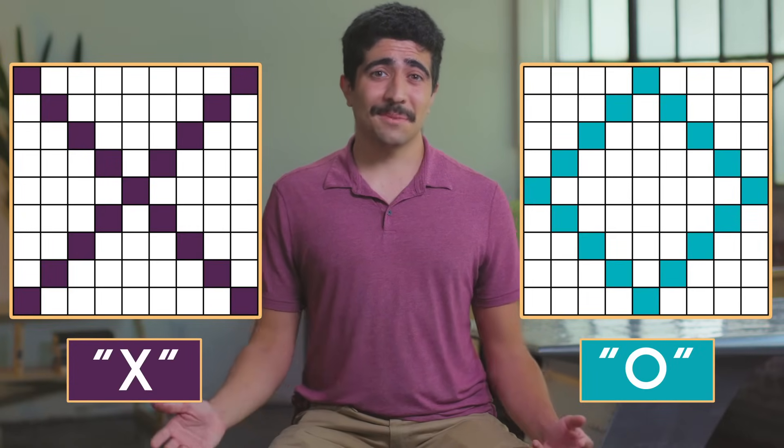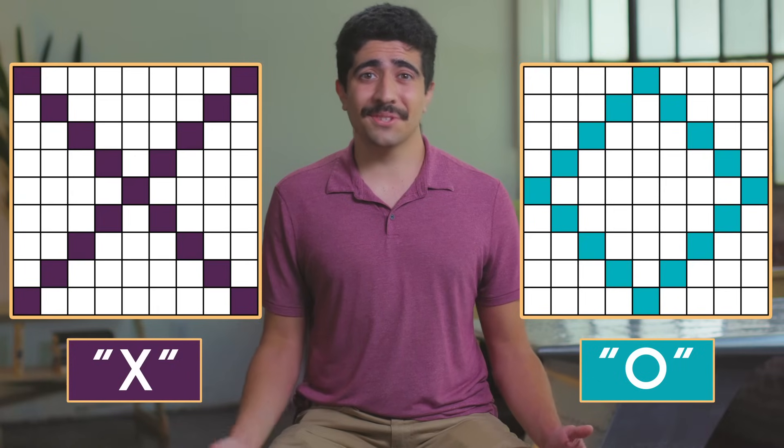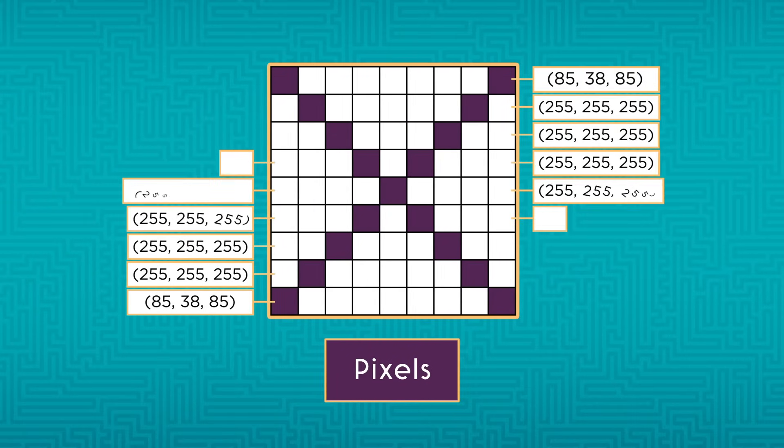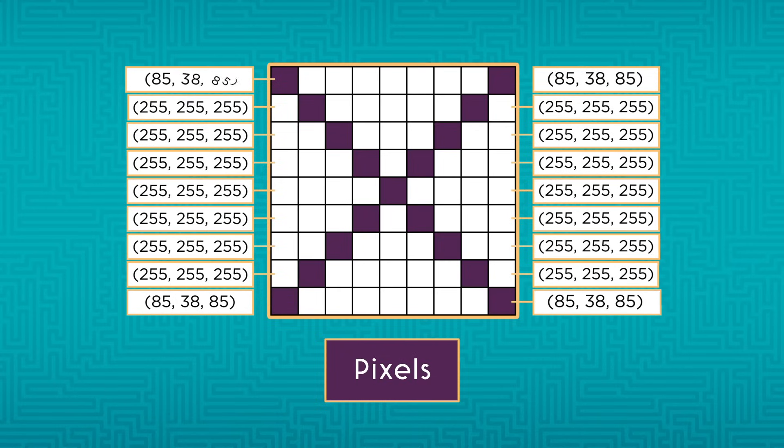But a computer looking at these images for the first time just sees a bunch of little squares called pixels. Each pixel has a numerical value. For a computer to see, it needs to make sense of these numbers to figure out what is in the picture.